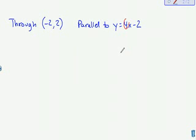Use what we know about parallel lines. Parallel lines have the same slope. So my new equation is also going to have a slope of 4 because my other one has a slope of 4.